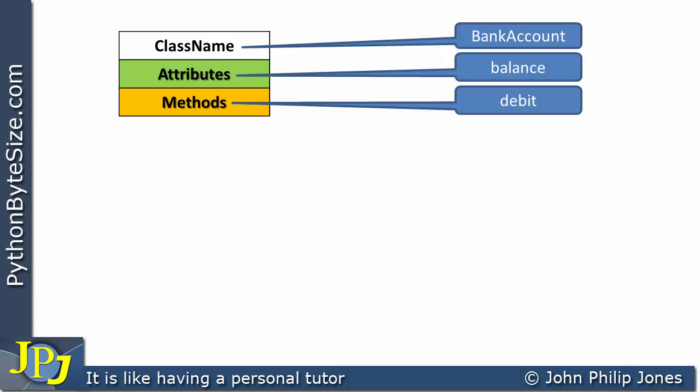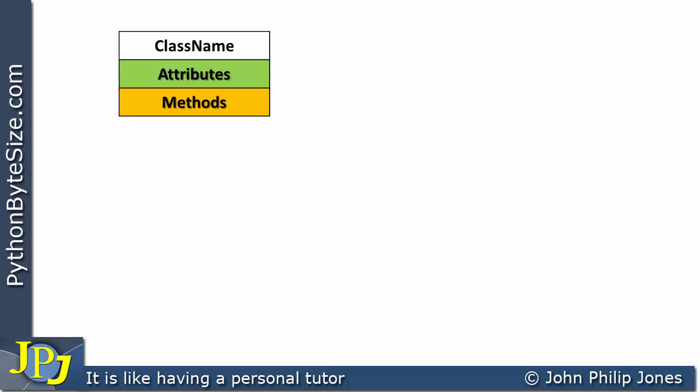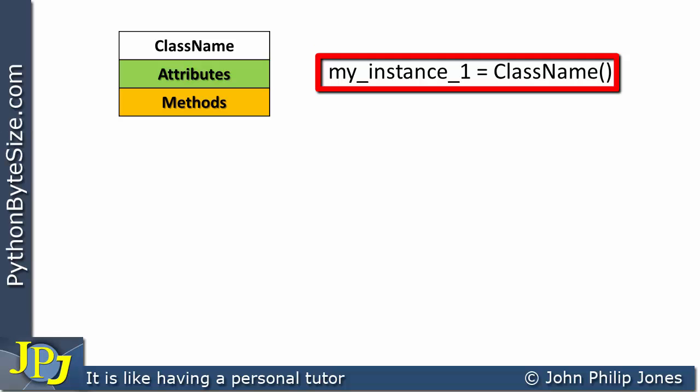Let's put the example of a bank account to one side for a moment and let's look at this generically. What we're going to have is the class and the name of the class as shown here. And if I now wanted to create an instance of this class, in other words an object of this class in Python code, this is how you would do it. You would choose an appropriate name, and I've just chosen my_instance_1 here, and that is assigned. And if you look here you can see that I've got the word ClassName because that is the name of the class, and I've got two brackets following it. And what this is going to do is create an instance of this particular class.